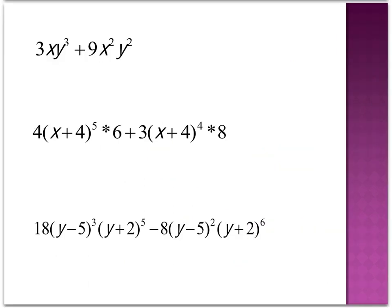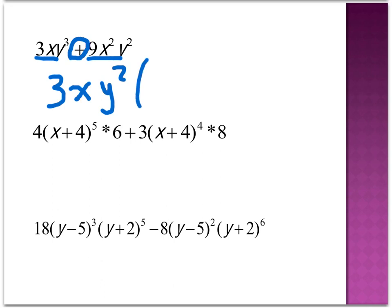Let's take a look at some more complicated examples. I'm looking for what's common to both terms — terms are always separated by an addition or subtraction sign. In this case, both terms share the number 3. For x² and x, I can divide both by x. For y³ and y², I can divide both by y². So the common factor is 3xy². Dividing the first term by 3xy² leaves y, and the second term leaves 3x. This simplifies the equation by finding the greatest common factor.